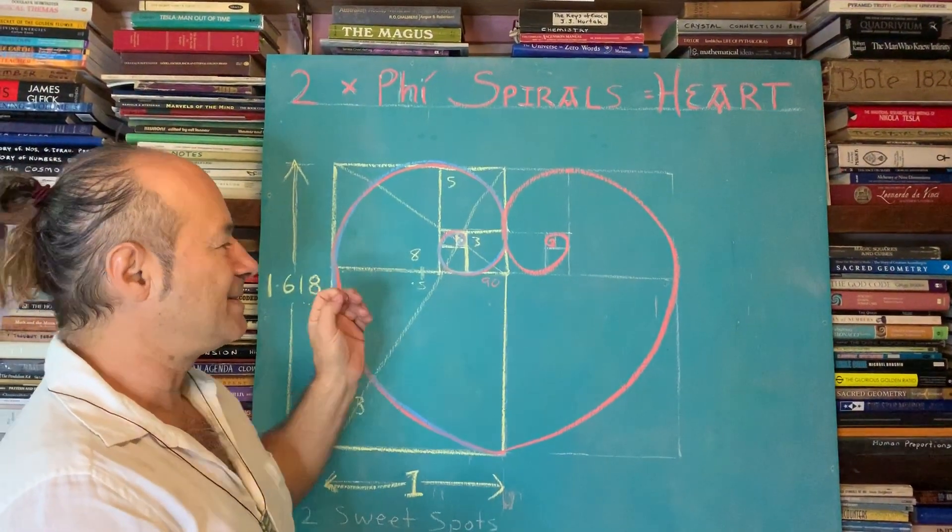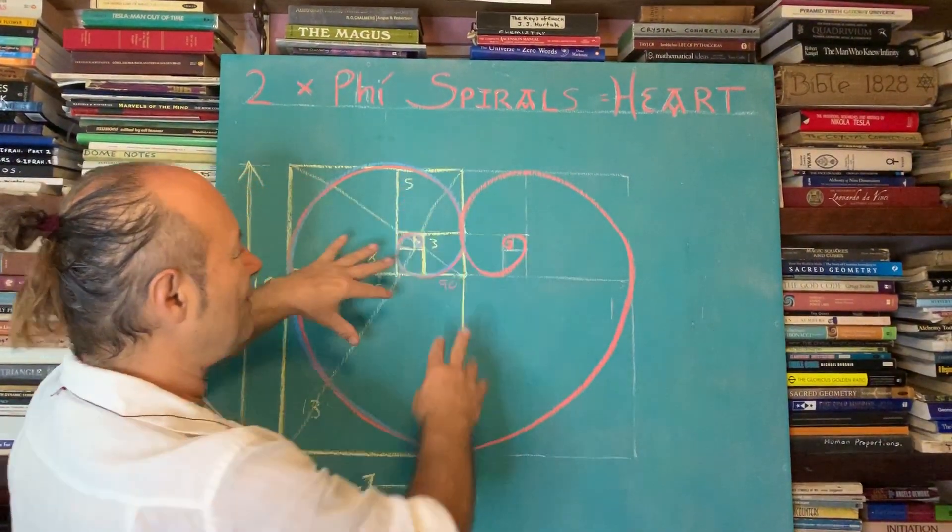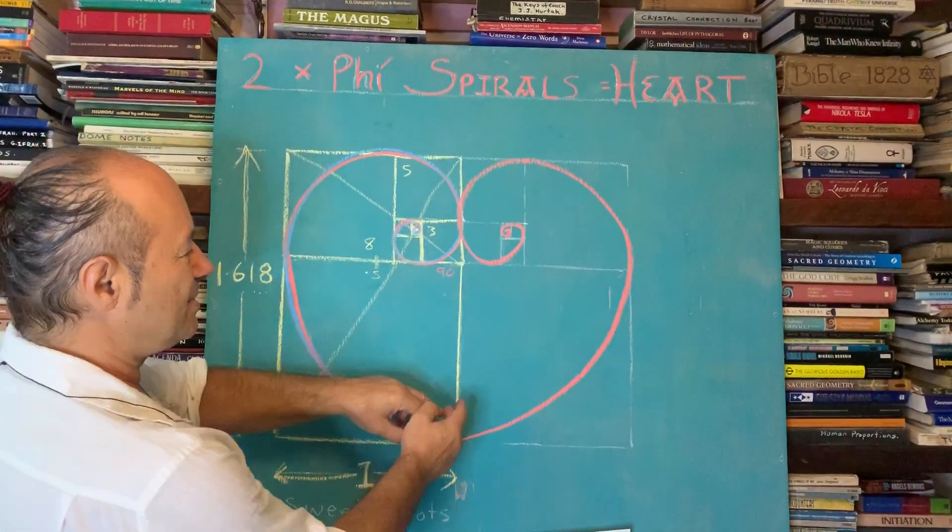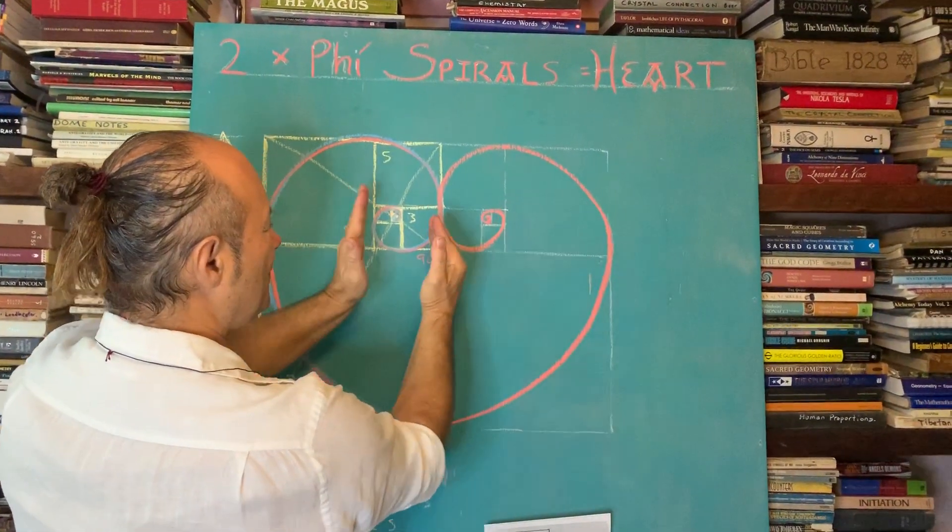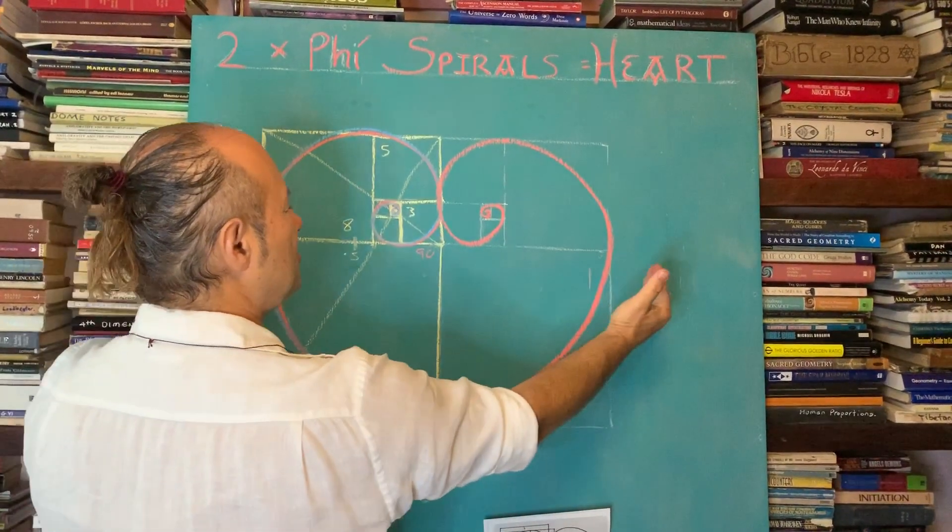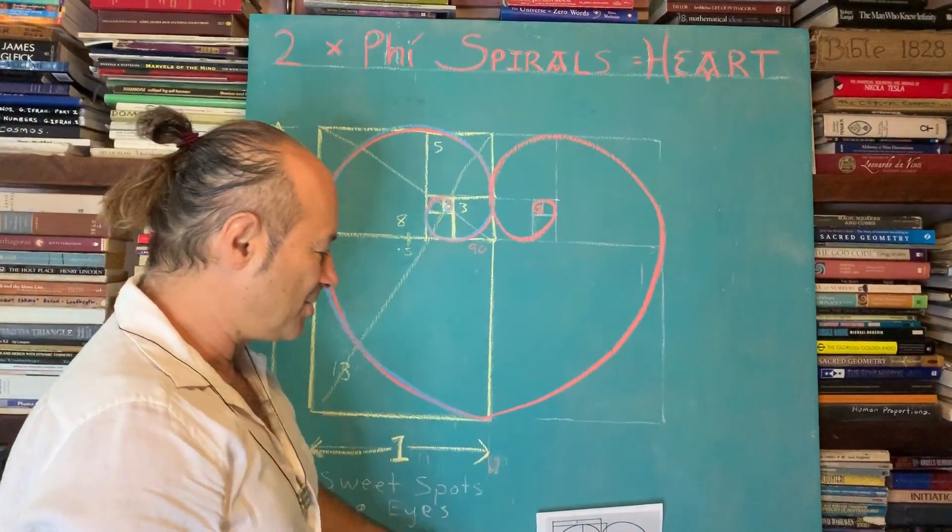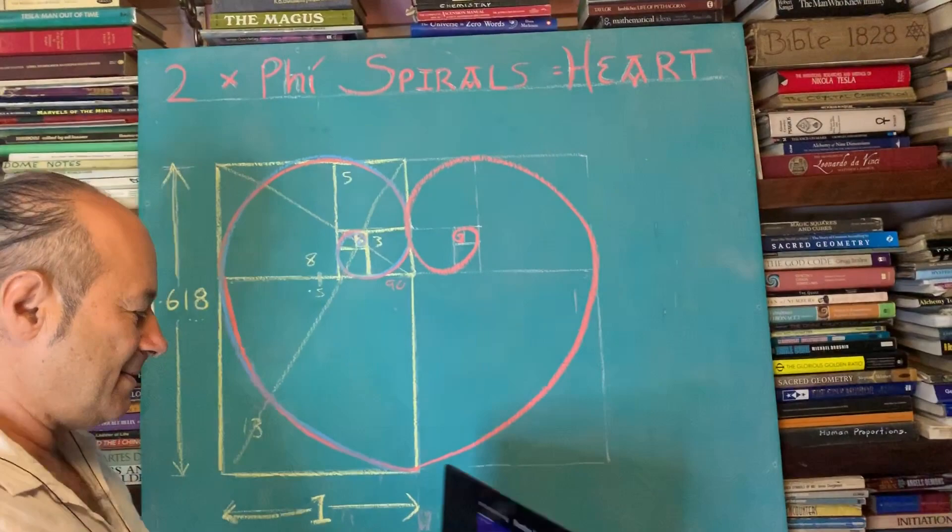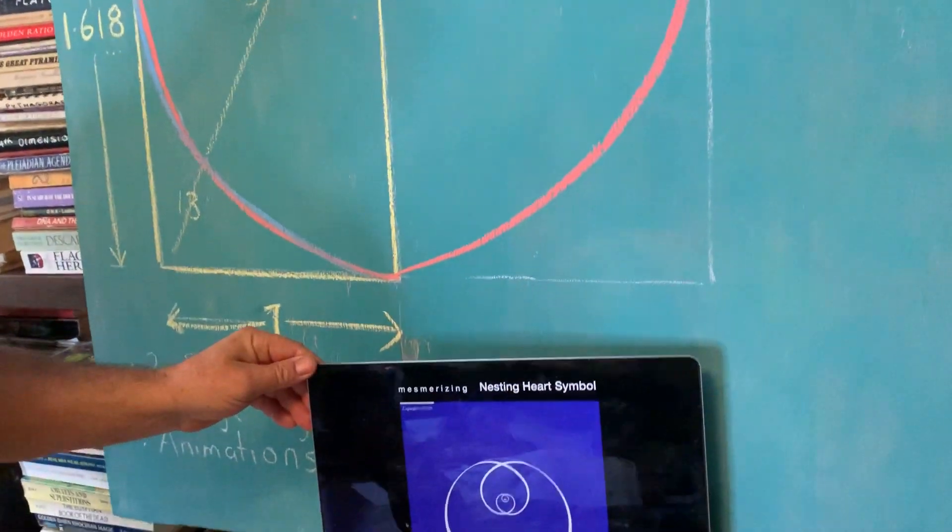What I want to show you is that there seems to be some kind of separation if these are two entities. What would happen if we could merge the two eyes of the spiral, the two consciousnesses come together as in love? So I'm going to show you that as an animation. We'll call it the nesting heart fractal or symbol.